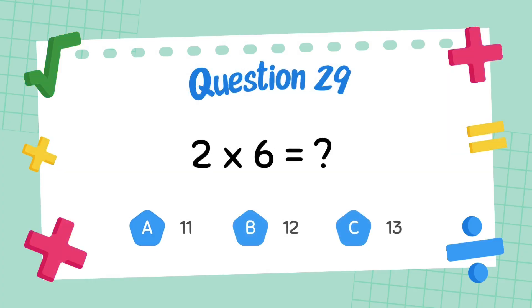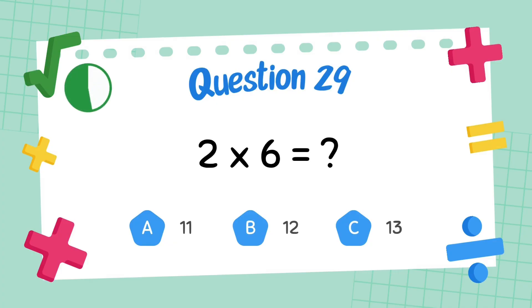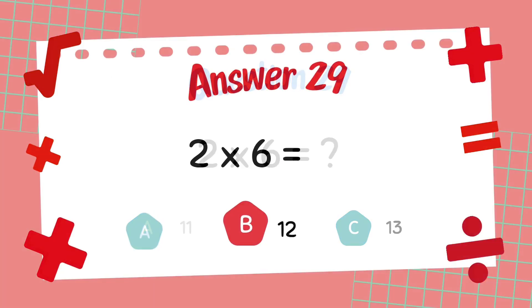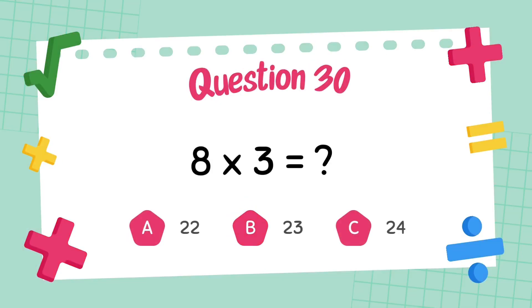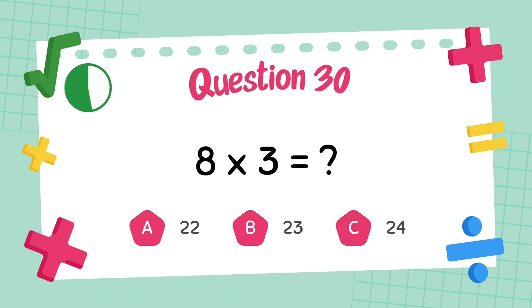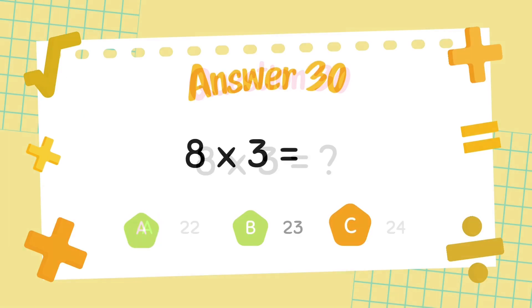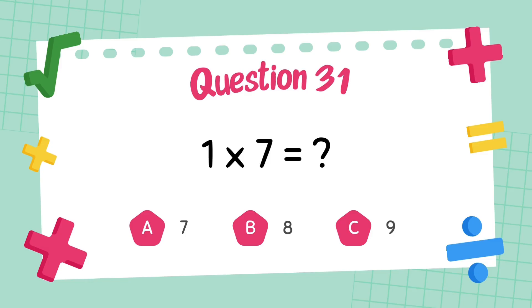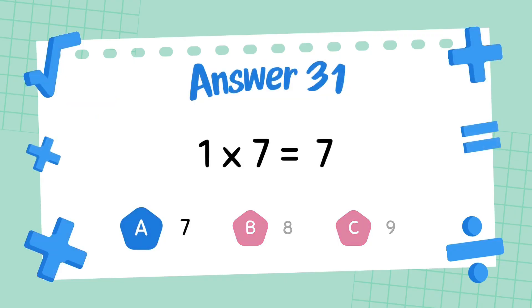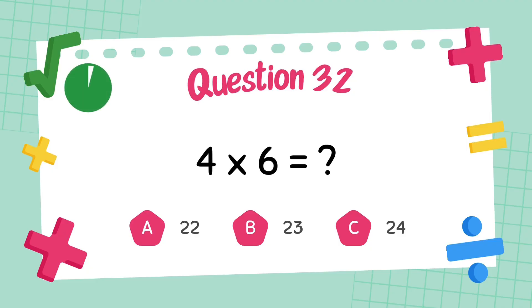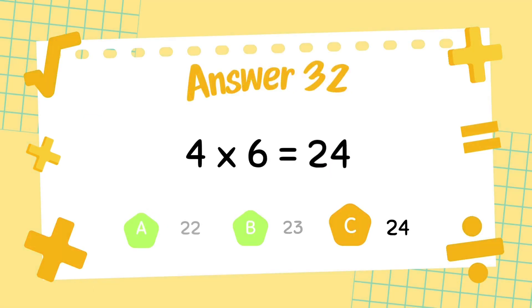What is 2 multiply 6? The answer is 6. What is 6 multiply 6? The answer is 12. What is 8 multiply 3? The answer is 24. What is 4 multiply 6? The answer is 24.